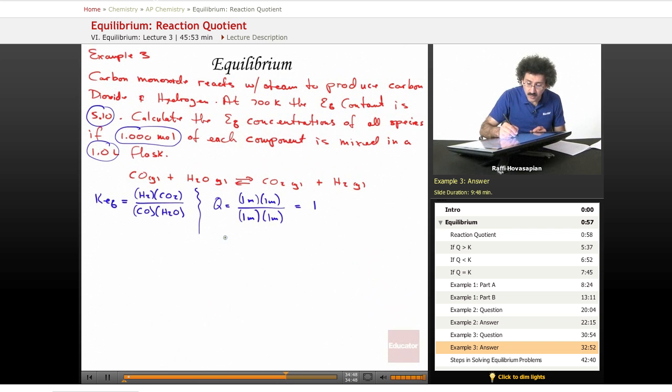Now, the reaction quotient Q, which is equal to one, is less than 5.10. Remember, they gave us the 5.10, which is equal to K. When Q is less than K, that means the reaction wants to move forward to produce more product in order to reach equilibrium. That means it hasn't reached equilibrium yet. It is still moving forward. It is producing more product to reach equilibrium. That means carbon monoxide and H2O gas are being depleted, and for each amount that these are depleted, because the ratio is one to one, an equal amount of CO2 and H2 are being formed. Now we can do the actual equilibrium part of this problem.